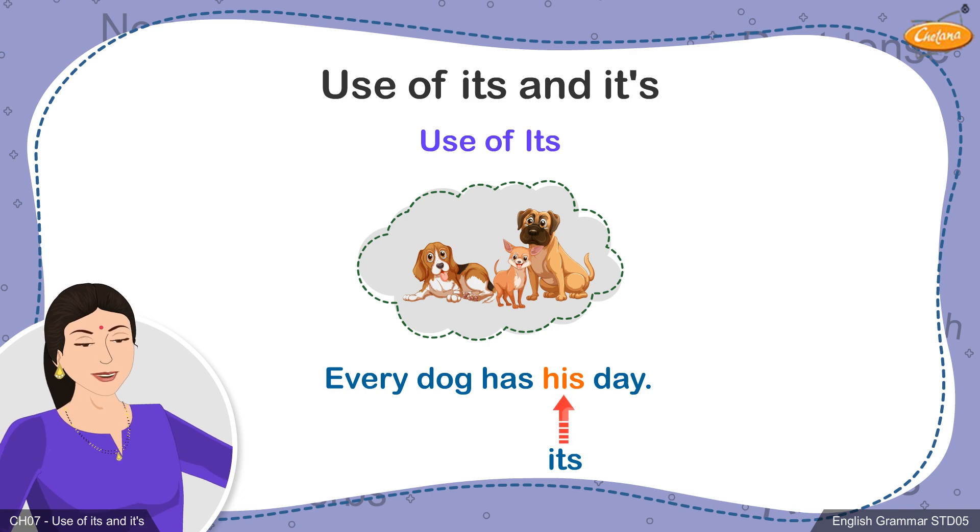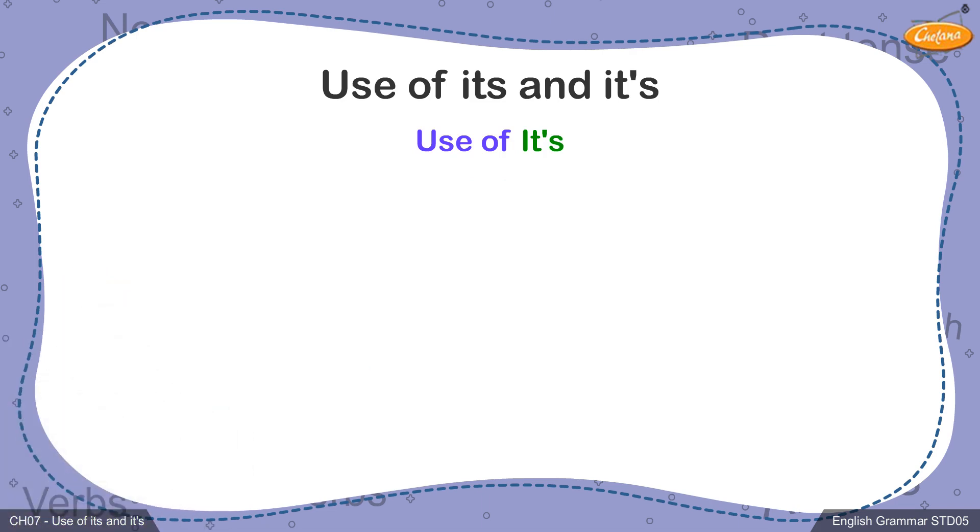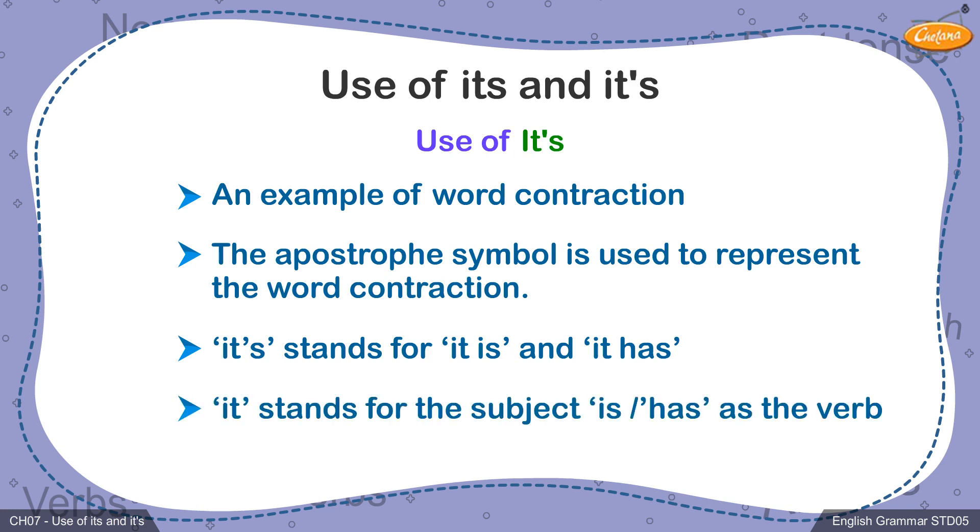Now that we have understood the usage of the possessive pronoun its, let's learn about it's. The word it's is an example of word contraction. The apostrophe symbol used in the word represents the contraction. The word stands for it is or it has. Therefore, it's can be considered as a combination of the subject it and the verb is or has.